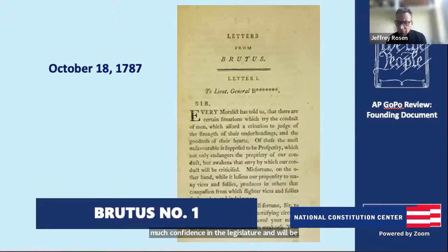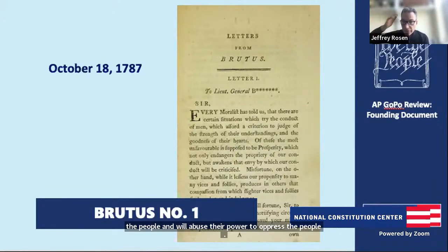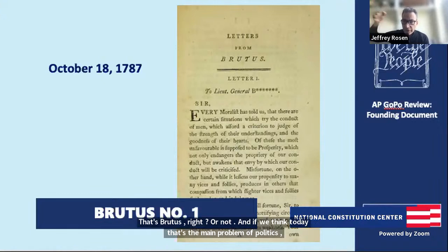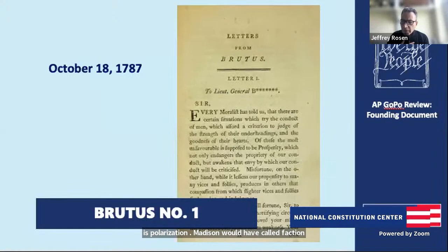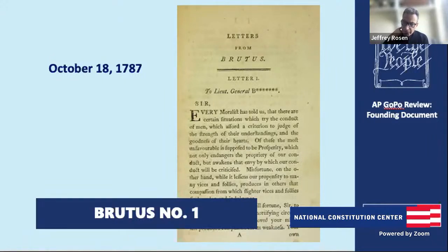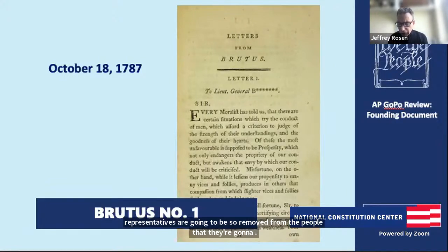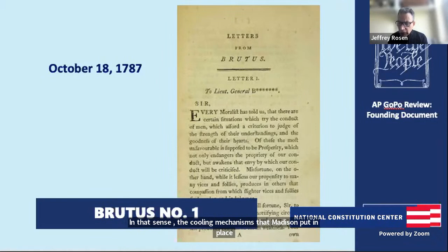If we think today that the main problem of politics is polarization — what Madison would have called faction — then Brutus wasn't quite right. Brutus worried that representatives would be so removed from the people that they'd pursue their own interests. Today, arguably, representatives are too responsive — not to the people as a whole, but to mobilized factions. In that sense, the cooling mechanisms Madison put in place to insulate representatives from popular pressure are too weak, not too strong. Maybe both Brutus and Madison failed to anticipate Twitter and Facebook — the problems we see today are not the ones either of them anticipated.